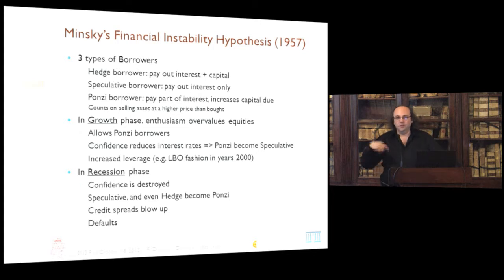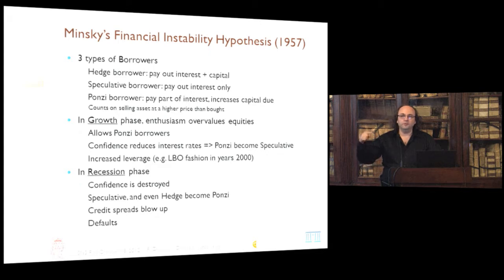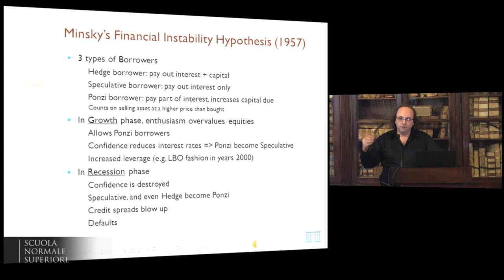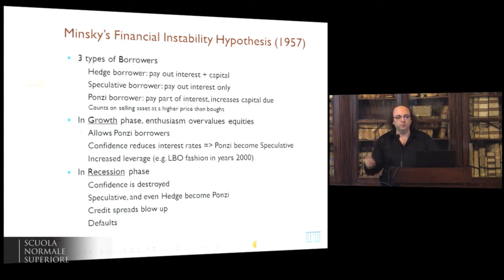In a recession phase you get a sudden downturn, confidence is destroyed, interest rates go up, and people who were speculative become Ponzi—even some hedge borrowers pass the barrier and become Ponzi. You enter into a deadly loop: credit spreads increase because confidence is destroyed based on hard facts. Indeed, people become Ponzi so they are not solvent; therefore interest rates go up, and it ends in defaults.